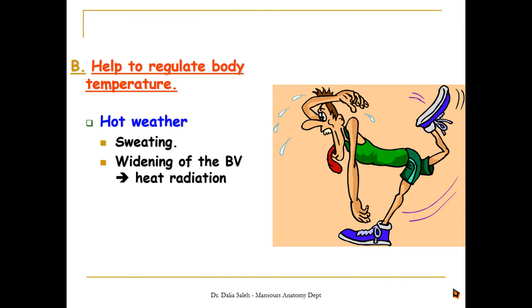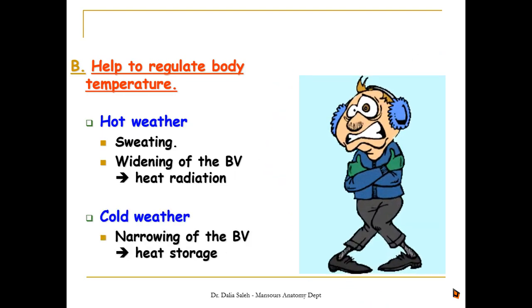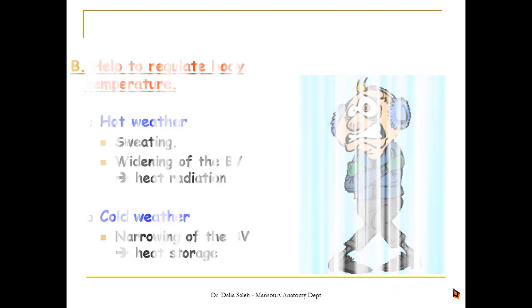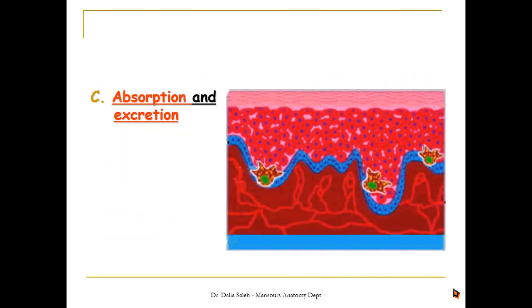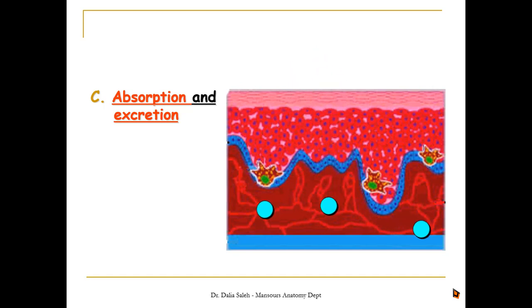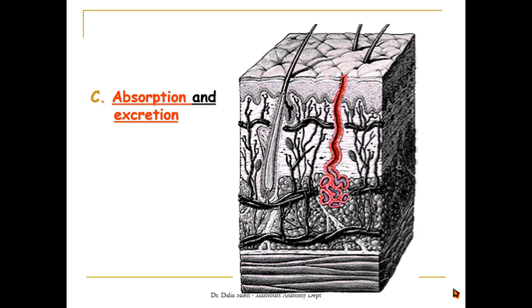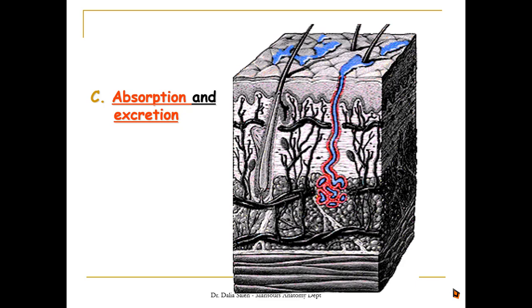The skin also helps in regulation of body temperature. In hot weather we sweat and there is widening of the blood vessels, leading to heat radiation from the body. In cold weather the opposite occurs — there is narrowing of the blood vessels, leading to heat storage. Another important function of the skin is absorption and excretion. Fat-soluble substances can be absorbed through the skin into the blood vessels, and excretion through the skin occurs via the sweat glands, allowing the body to get rid of excess water, salts, and even urea.